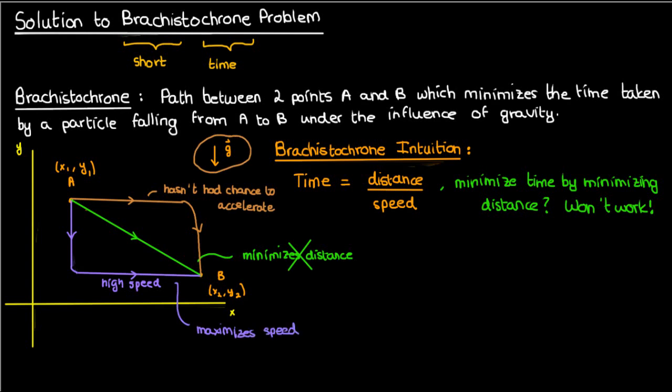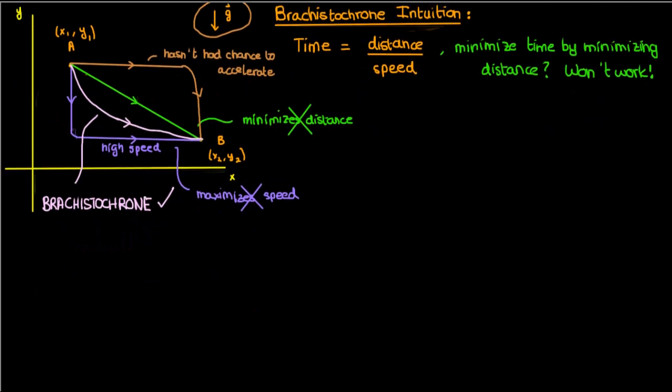But even this steeper curve isn't quite the path of minimum time, because although it maximizes speed, the distance along this path is a little too long. And that's why the actual brachistochrone is an intermediate between the minimum distance path and the maximum speed path. So something like this. So ultimately the brachistochrone curve is formulated using a combination of minimizing the distance and maximizing the speed, instead of just minimizing the distance with a straight line, or just maximizing the speed with a steep curve.